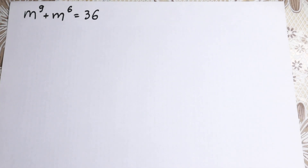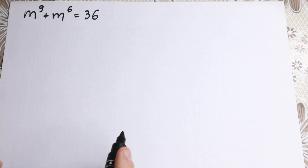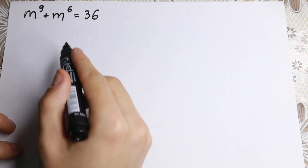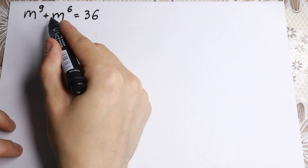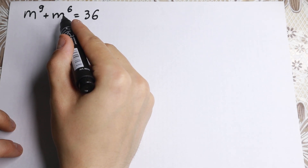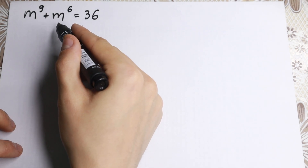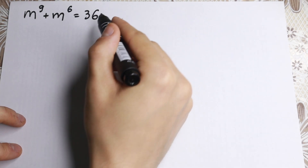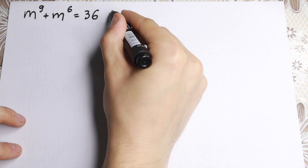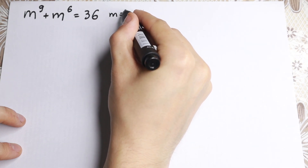Hello my friend, happy to see you here on my channel. Today we have a really interesting math problem for you: m to the 9th plus m to the 6th power equals 36, and we need to find our m.